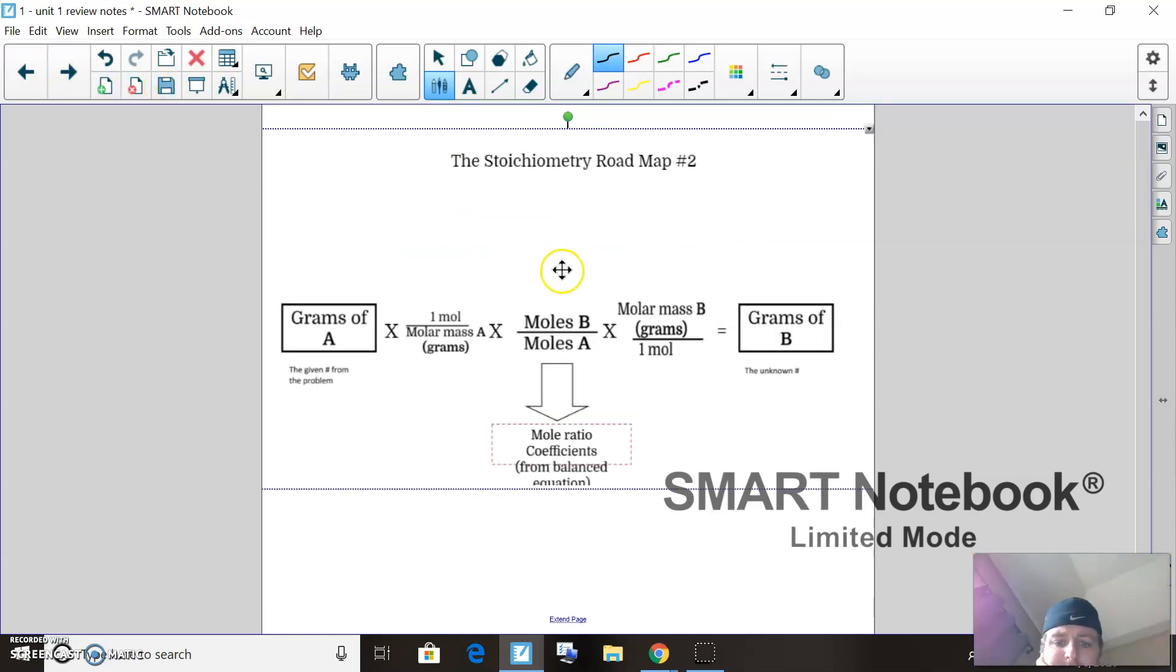If you remember way back in the day, we had this thing called the stoichiometric roadmap. What this is—I shortened it a little bit because we can essentially do this. Here's what you need to know: this is the given number from the problem. These three brackets here are what you're going to fill in every time. It's the same thing, same process every time.